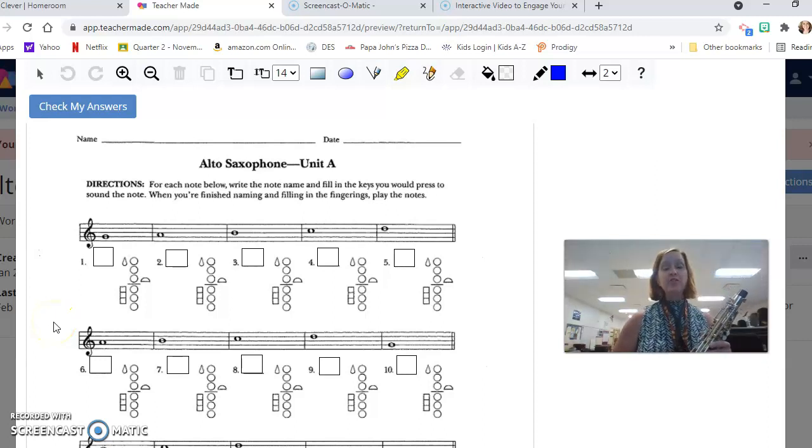Hi. Today I'm going to show you how to fill out this fill-in-the-blank fingering chart for the alto saxophone. This is unit A. If you are doing this digitally, you're going to follow along and do what I show you to do. If you are doing this as a paper and pencil assignment, then you will simply write on the lines where here we have text boxes and you will color in the shapes that are necessary to make that sound on your saxophone.